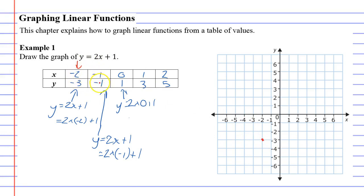The next one when x is negative 1, y is negative 1. This is here matching with the negative 1 and negative 1. In the third row when x is 0, y is 1. So when x is 0, y is 1. Then we've got 1, 3, and 2, 5.